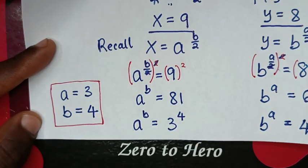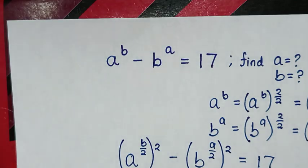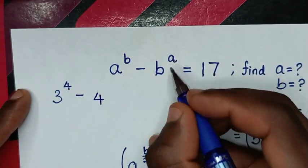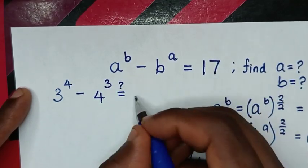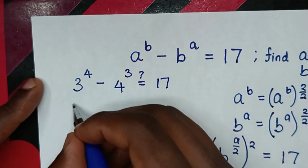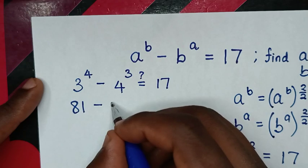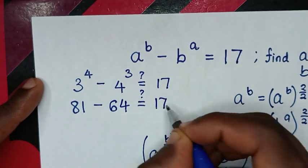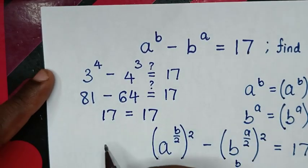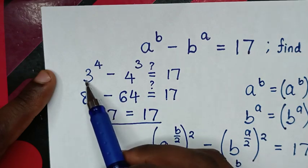To verify: with a equals 3 and b equals 4, we check a power of b minus b power of a equals 17. So 3 power of 4 is 3 times 3 times 3 times 3, which equals 81. And 4 power of 3 is 4 times 4 times 4, which equals 64. Then 81 minus 64 equals 17, which equals the right-hand side. Since left side equals right side, it is confirmed that a equals 3 and b equals 4.